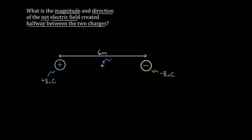At first you might think the answer should just be zero, right? It's very tempting to say the electric field is just zero there, because you've got a positive eight nanocoulomb charge and a negative eight nanocoulomb charge, and those should just cancel. But you have to be really careful — it turns out that's not true here.